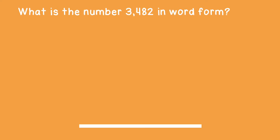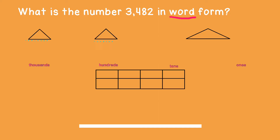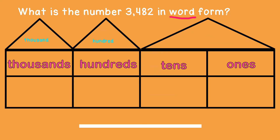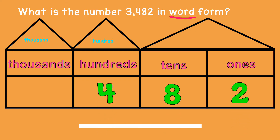Let's look at this example. How is the number 3,482 written in word form? Remember that word form means to write numbers using words. To write the number in word form, we will start by placing the digits in the number inside the place value chart. We will start with the two, eight, four, and three.